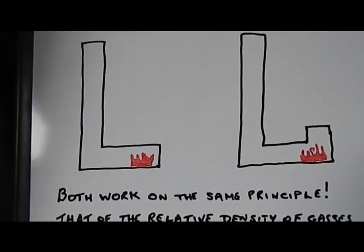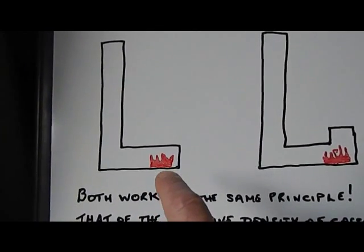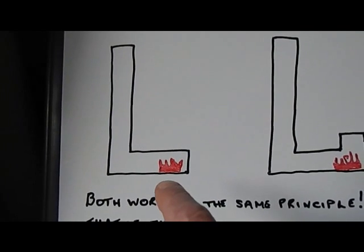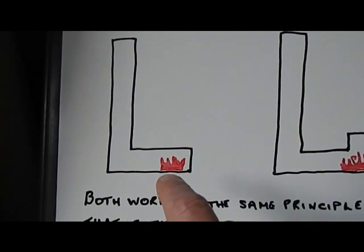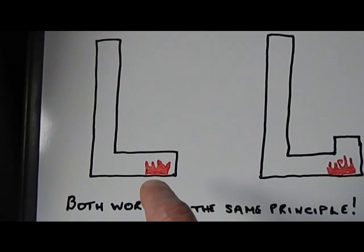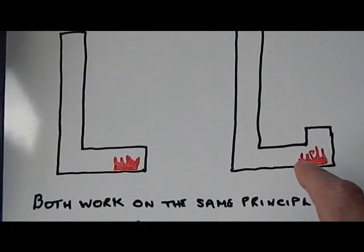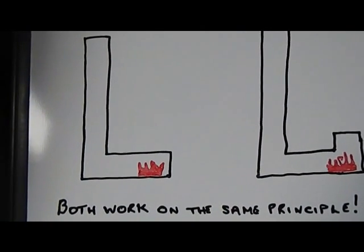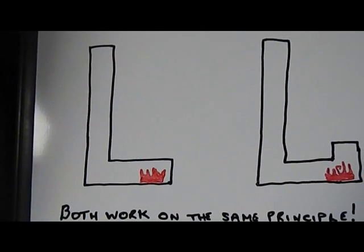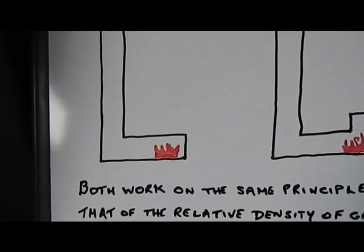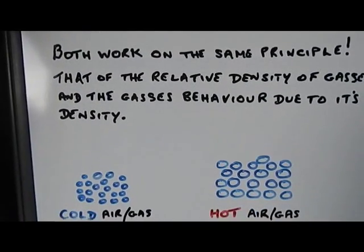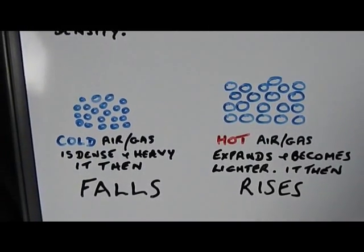So in the L shape, the red is the fire, and the J shape, similarly the red is the fire. Density of gases works on the principle which is below here that I've tried to draw out for you to understand.